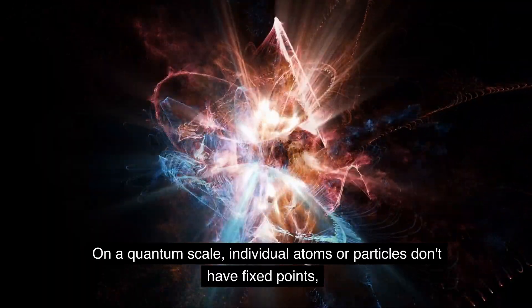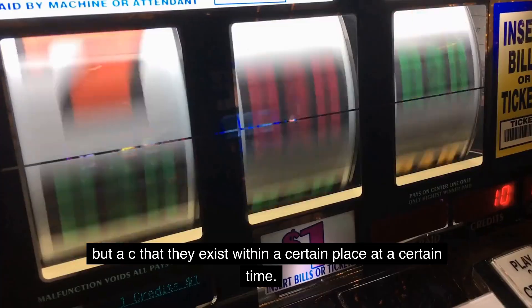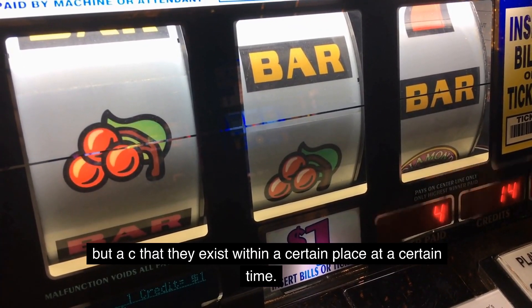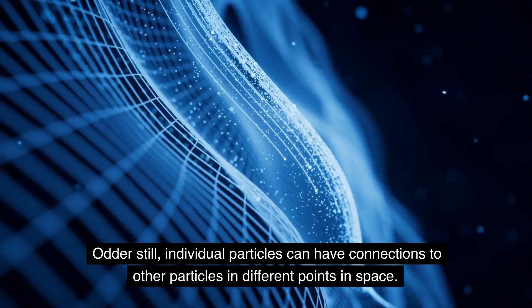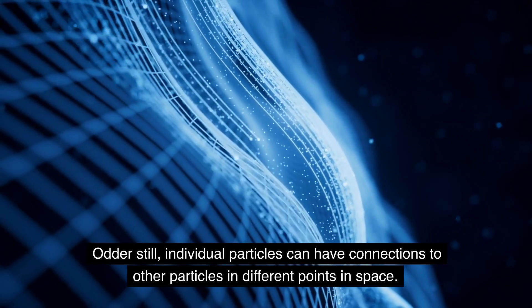On a quantum scale, individual atoms or particles don't have fixed points, but instead they exist within a certain place at a certain time. Odder still, individual particles can have connections to other particles in different points in space.